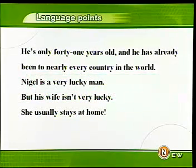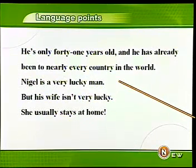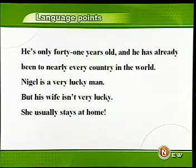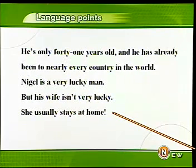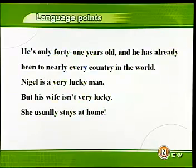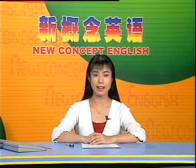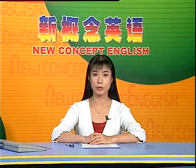Nigel is a very lucky man, but his wife isn't very lucky. Nigel是一个幸运的人，但是他的妻子就没那么幸运了。Then why is his wife unlucky? Because she usually stays at home. 她通常待在家里。这篇课文虽然很短，但是却包括了过去、现在、将来等各个时间段里发生的事件，这一点请大家特别注意。